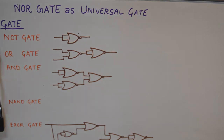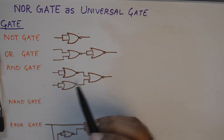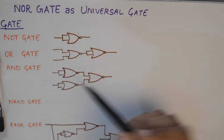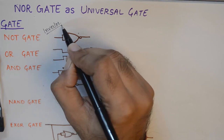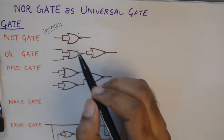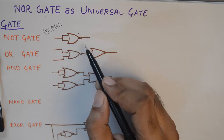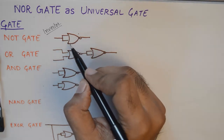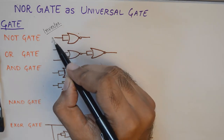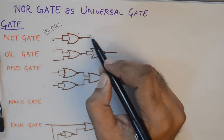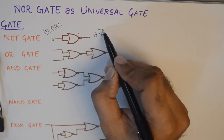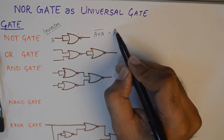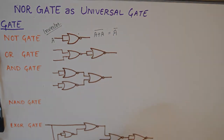First things first, the simplest gate is the NOT gate, or the inverter. You can make a NOT gate from a NOR gate by shorting the two inputs, and at the output you'll get A plus A bar, which is of course A bar. That is how you make a NOT gate from a NOR gate.